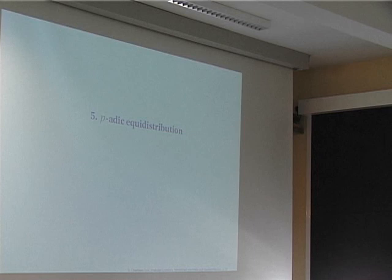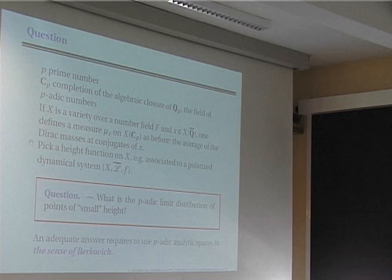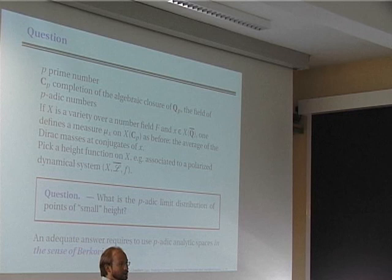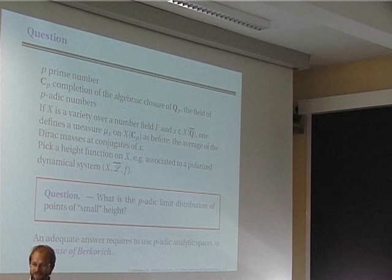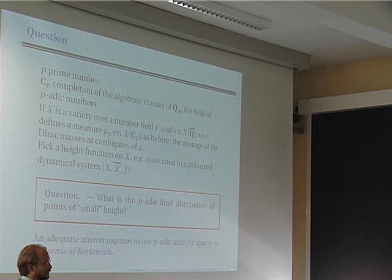The question is: you take a p-adic number field, complete it with respect to the p-adic valuation, take the algebraic closure to get Q_p^bar (which is not complete), complete again to get ℂ_p, which is algebraically closed. You take a variety over a number field F, and given an algebraic point on X, you can still define a discrete measure on X(ℂ_p), at least in the sense of p-adic analytic spaces.